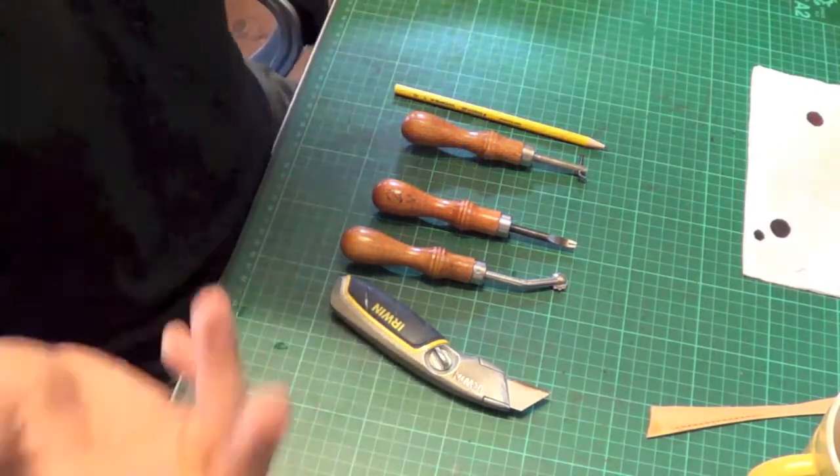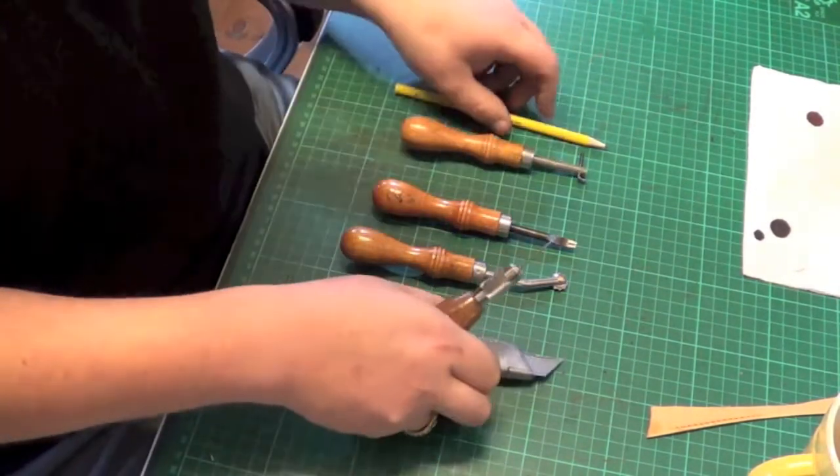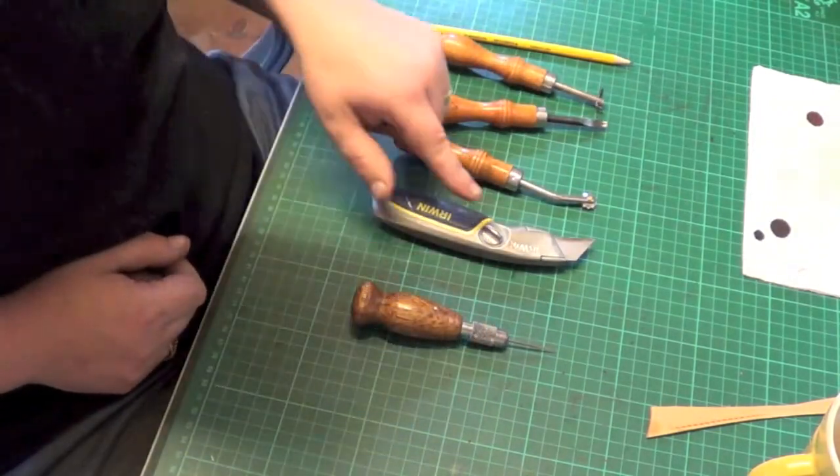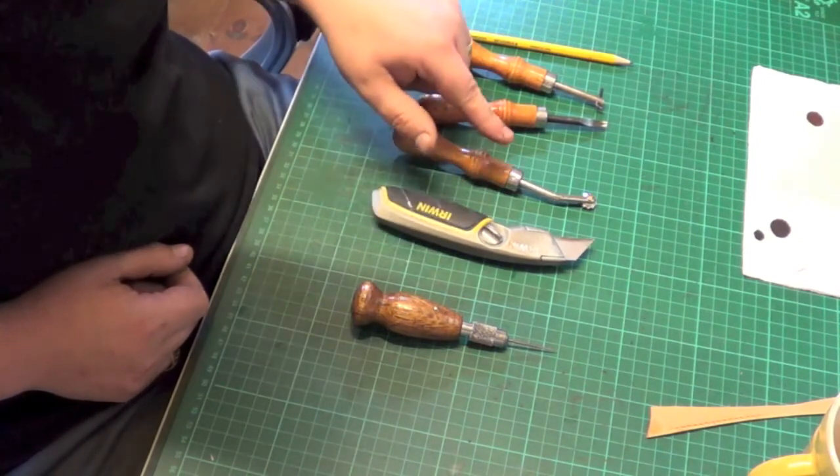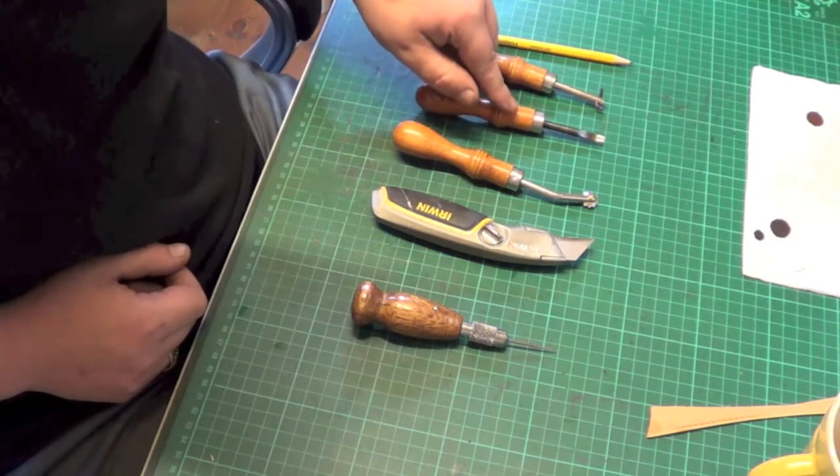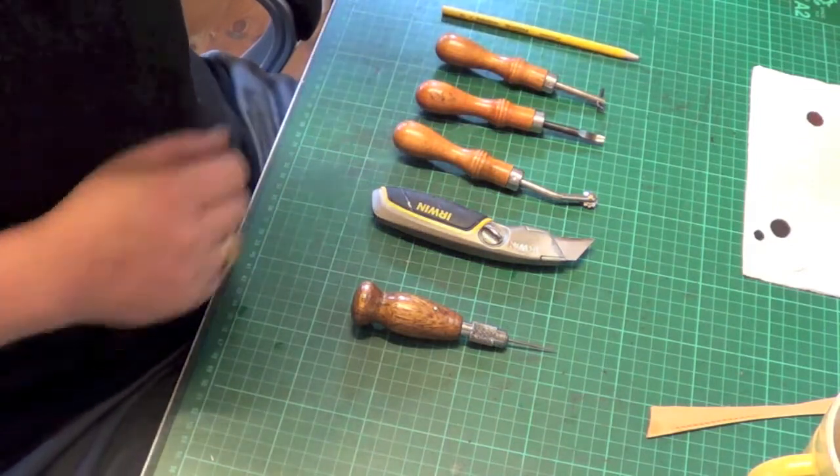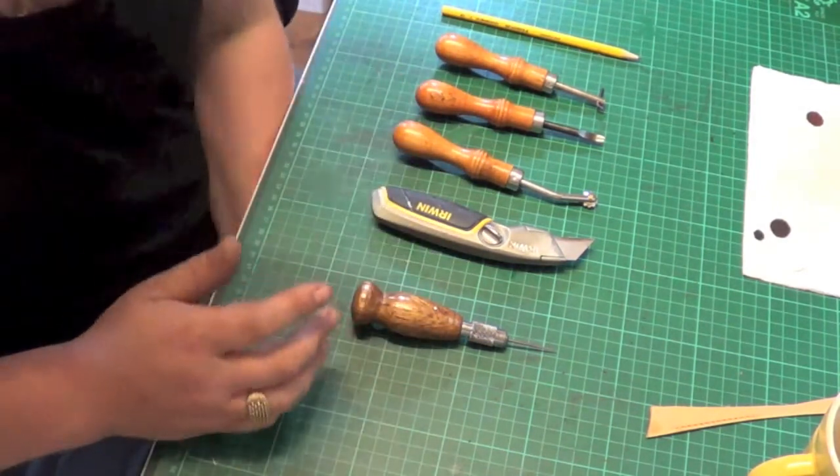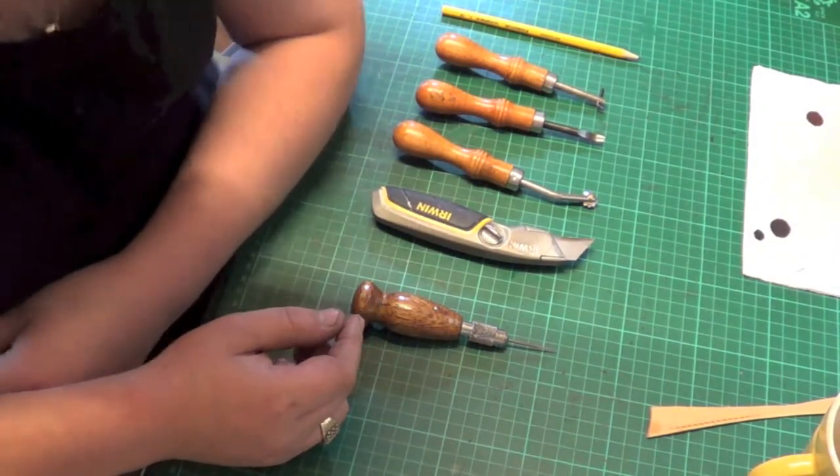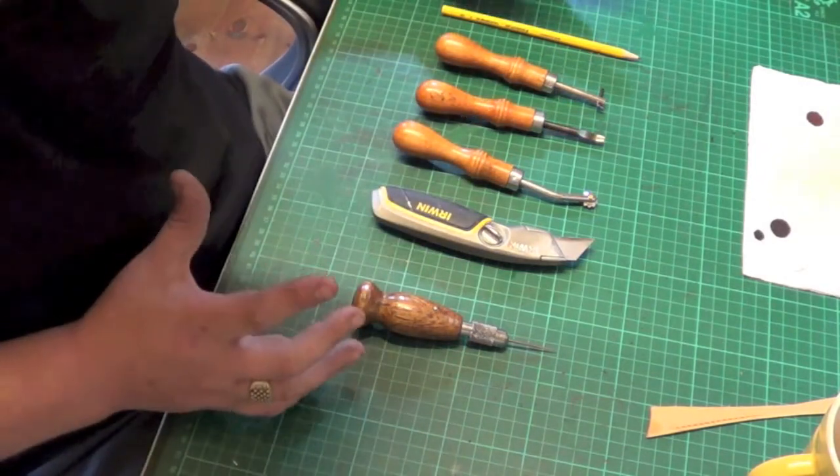But that's another thing all together. That's an awl for just pricking your holes. So an awl, a knife of some type, an overstitch wheel, an edge beveler, a stitch groove, and a pencil. Those tools there will make you really anything you really need. So for a starter kit, for the people that have asked me, this is what I would recommend you get.